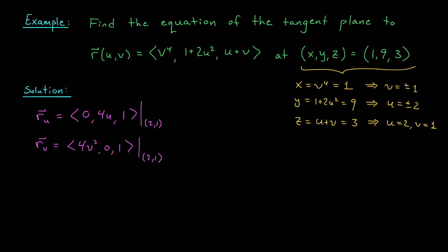My first derivative, ru, is given by zero, eight, one. And my second derivative, rv, is given by four, zero, one. To find the vector that's perpendicular to our curve at this point, we take the cross product.